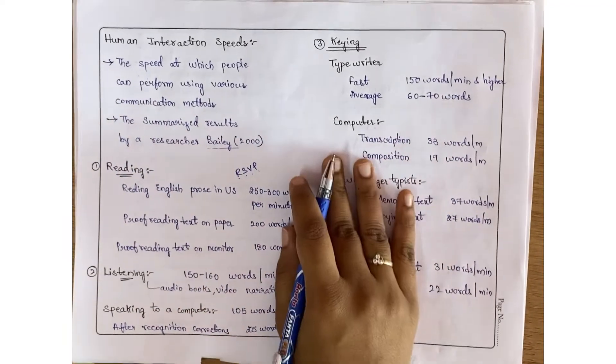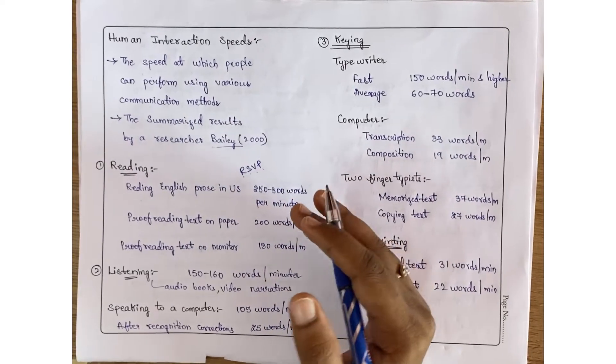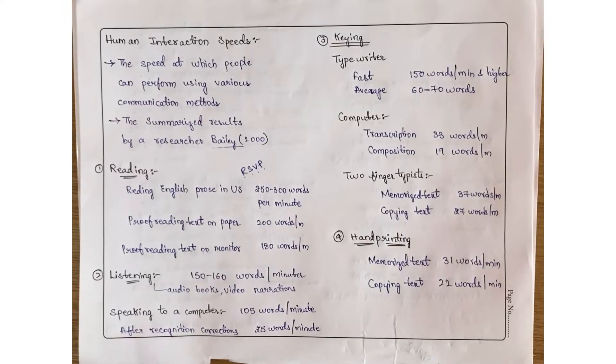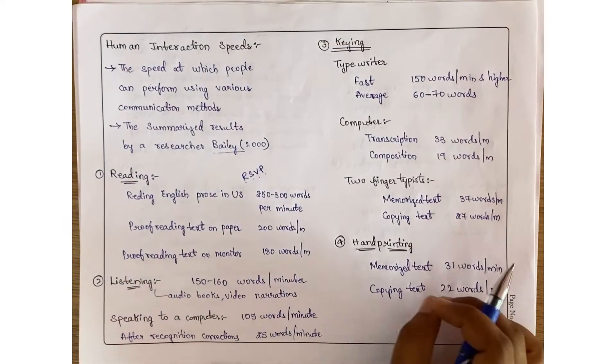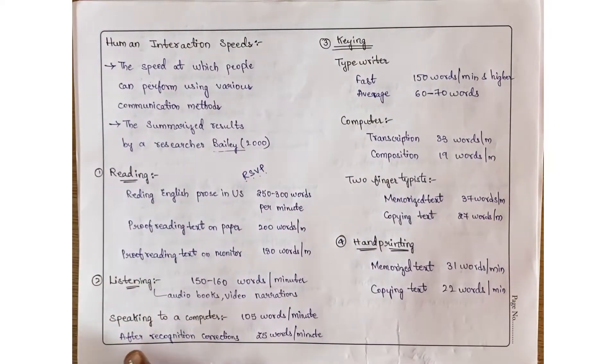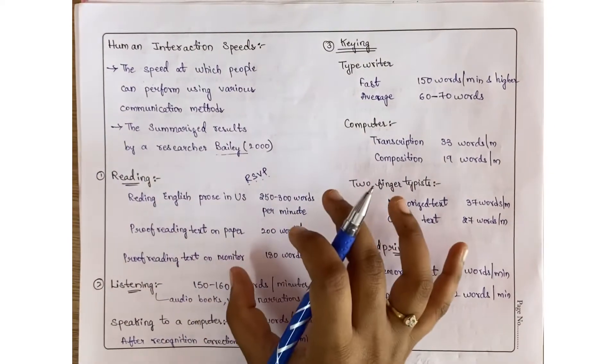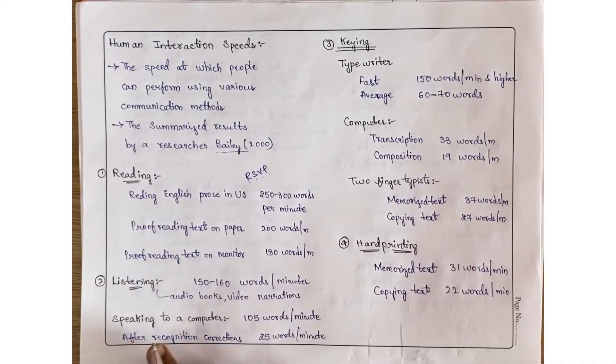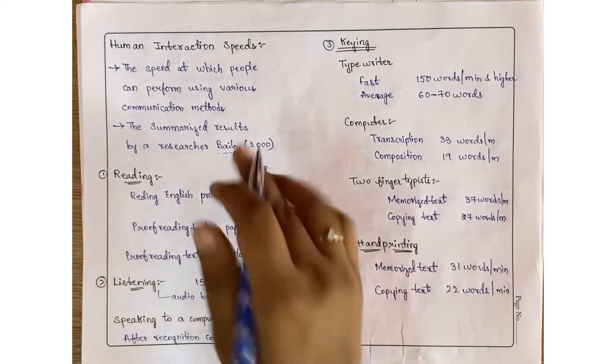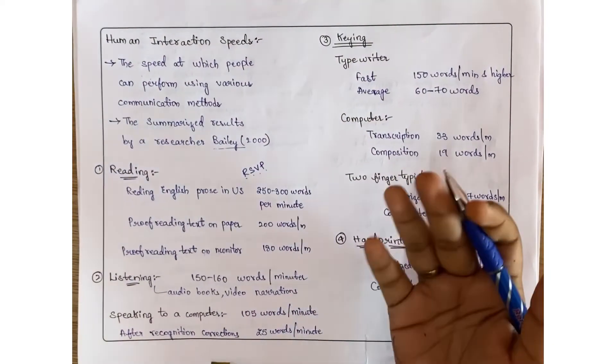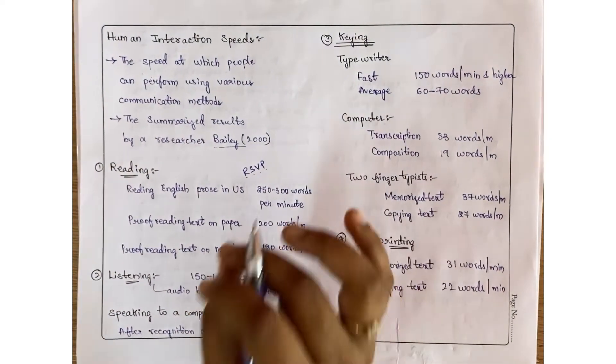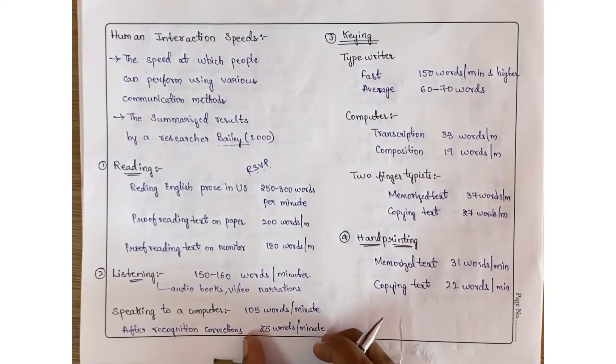Speaking to a computer, dictating words, is 105 words per minute. However, if you need to recognize all grammatical errors and ensure accuracy, it reduces to just 25 words per minute. Simply speaking, you can speak 105 words per minute, but ensuring there are no grammatical mistakes lowers it to 25 words per minute.